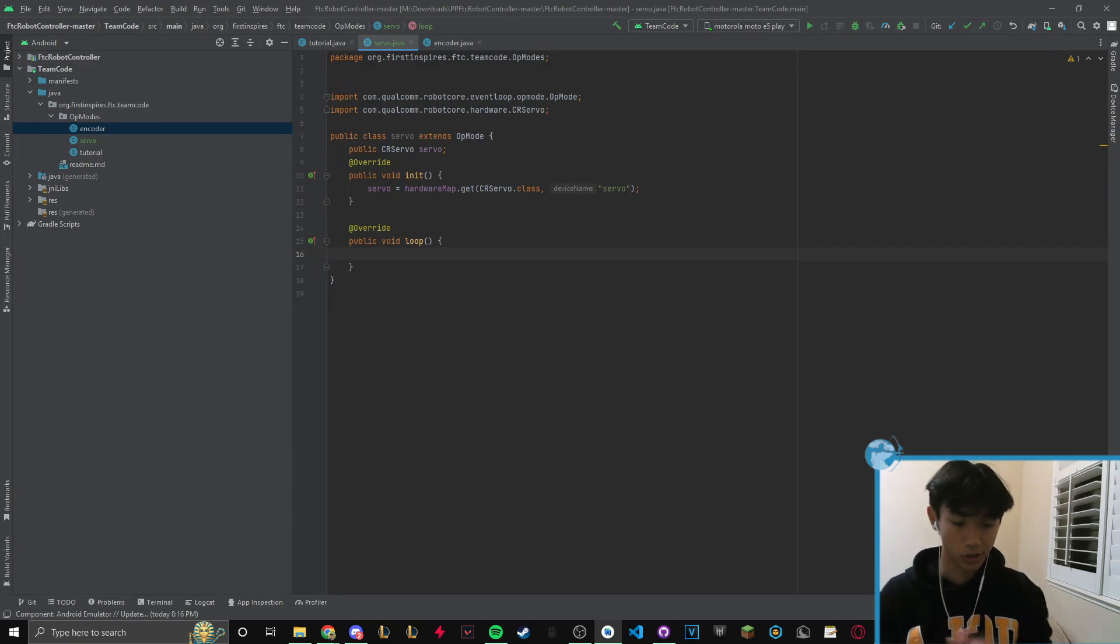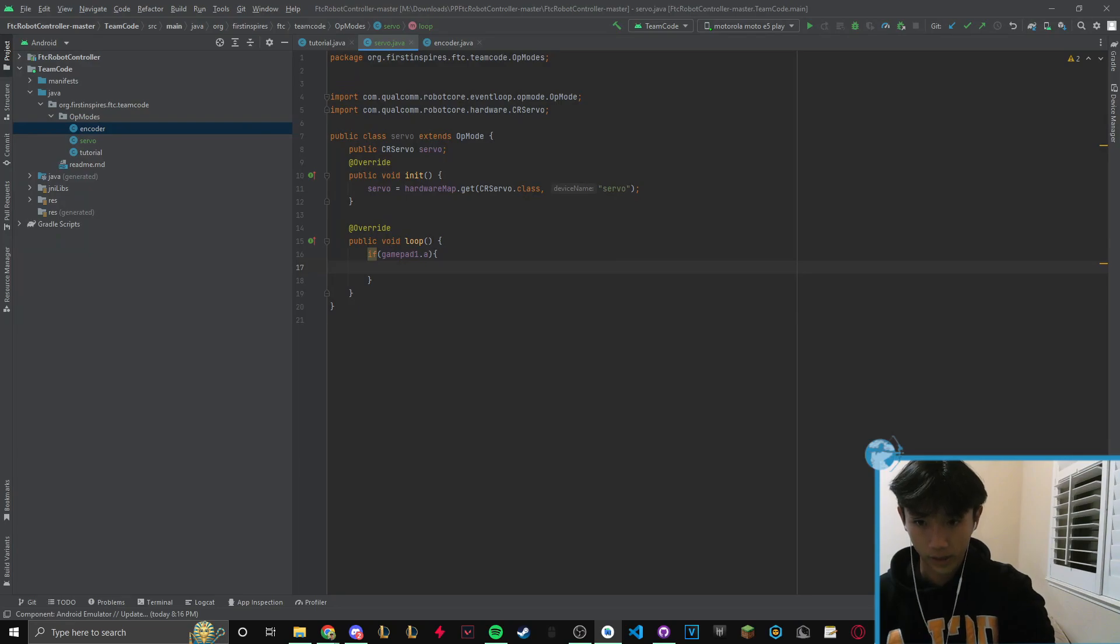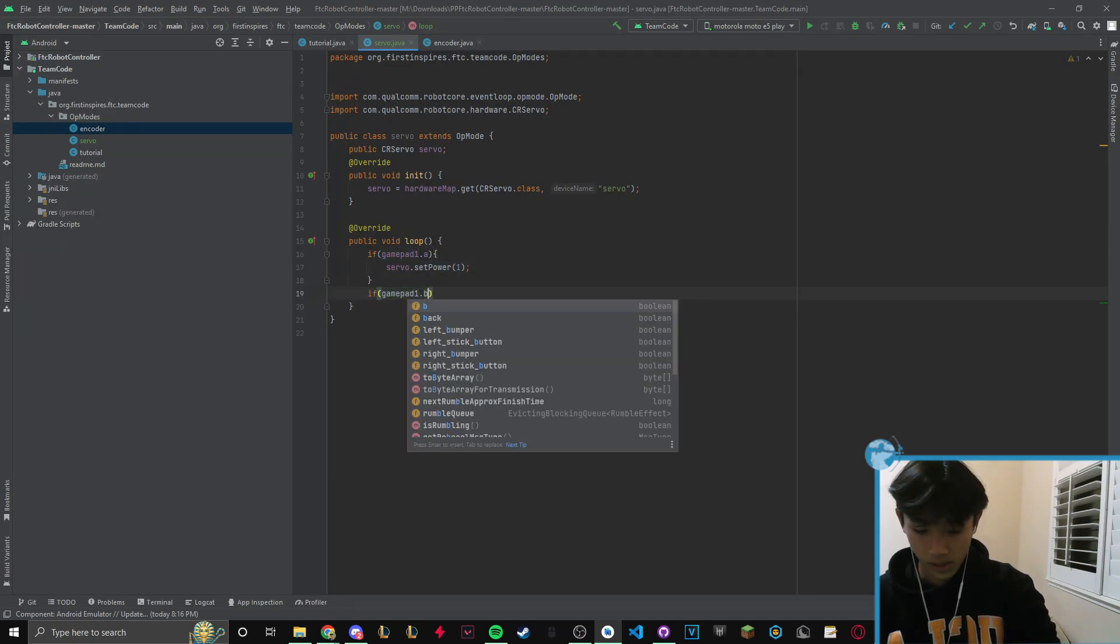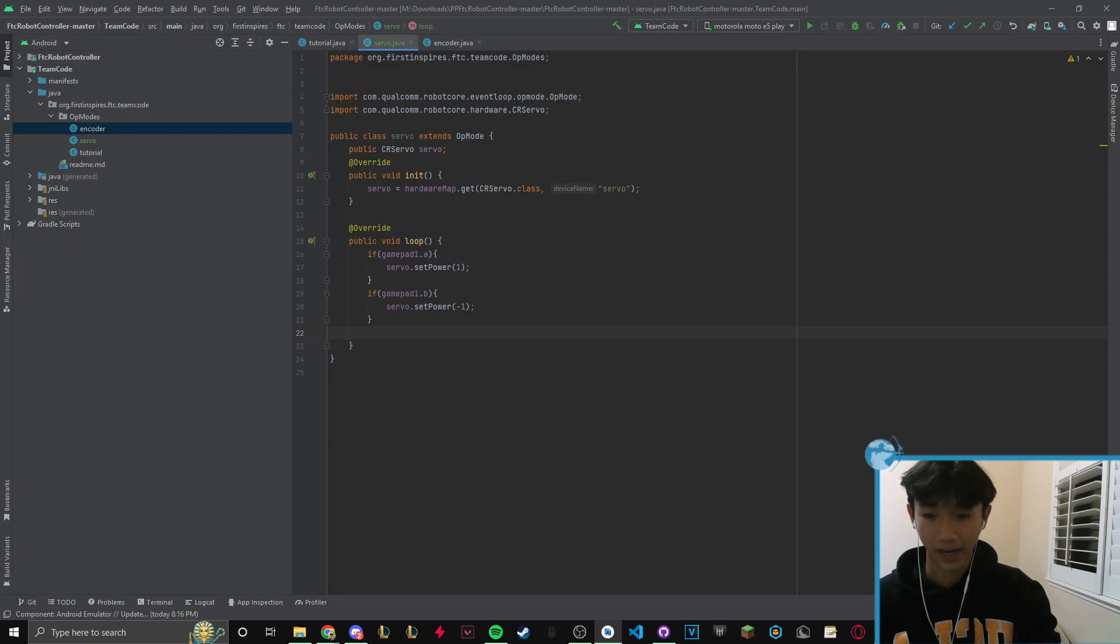And in this loop, what I want to do is just do some basic, very simple controls. So we're just going to do if gamepad1.a is equal, we're just going to make it do servo.setPower is equal to one. And then if gamepad1.b is servo.setPower is negative one. And to make sure that it will stop after, we're going to keep this inside the loop, but outside the if statement, we're going to do servo.setPower is equal to zero. And this will basically allow it to when we click A or B, it will spin. But then right after we stop clicking it, it will stop.